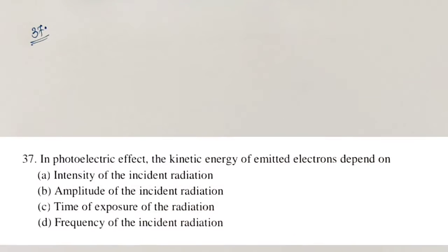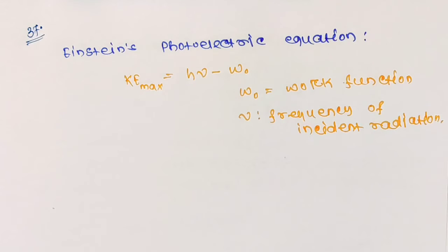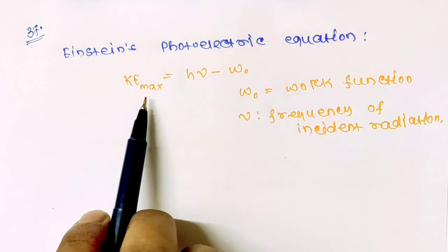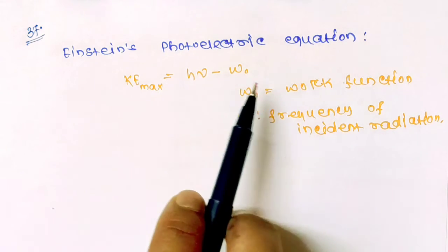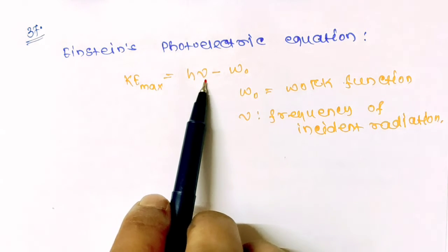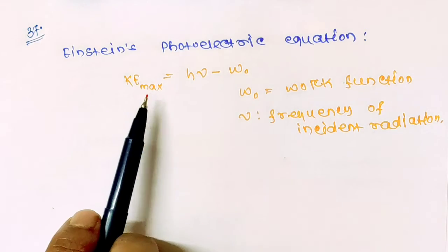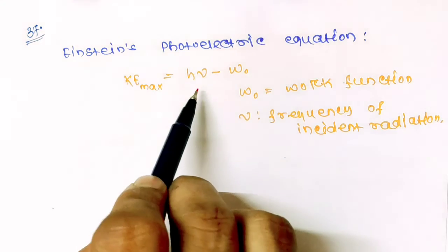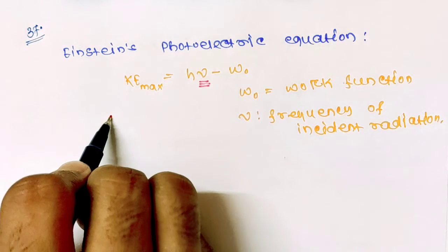Question number 37: In the photoelectric effect, the kinetic energy of emitted electrons depends on what? From Einstein's photoelectric equation, kinetic energy of emitted electrons equals hν minus W₀, where W₀ is the work function of the metal, h is Planck's constant, and ν is the frequency of the incident radiation. So the kinetic energy depends on the frequency of the incident radiation. The correct option is option D.